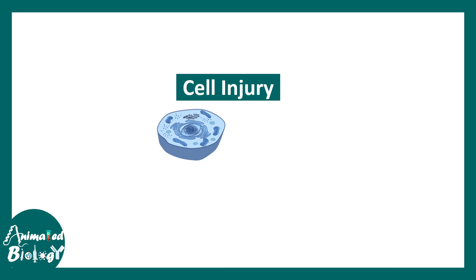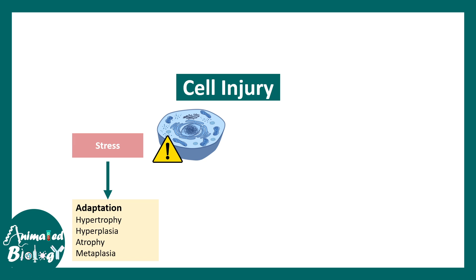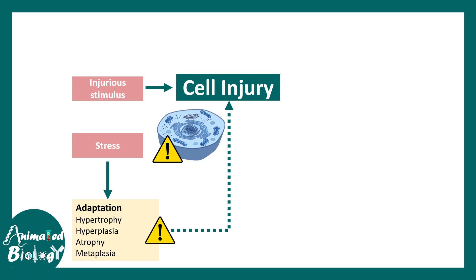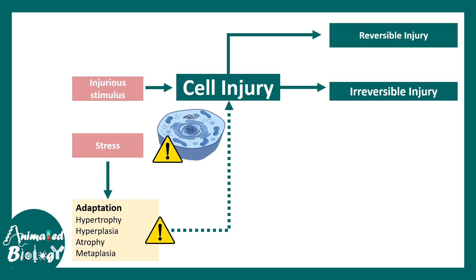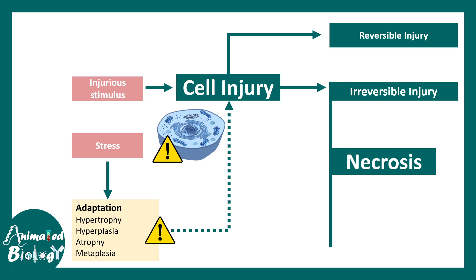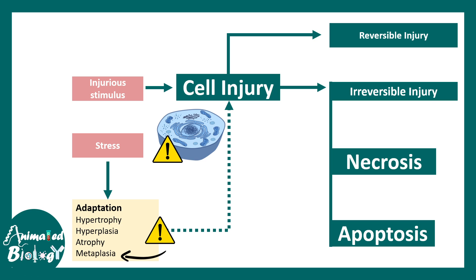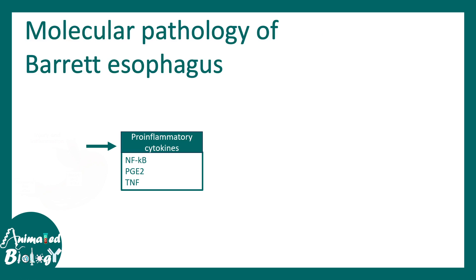Overall, whenever cells undergo injury or stress — in this case acid stress — they try to adapt. Metaplasia is one type of adaptation response. If the injury is very serious and the stimulus is persistent, there can be very bad consequences like necrosis or apoptosis. If it is mild, metaplasia is one way by which the body can fight back and adapt to that stress.